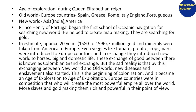Explorers used maps to go beyond the known world and learn about new lands. Approximately over 20 years, 7 million in gold and minerals were taken from America to Europe. Even vegetables like tomato, potato, maize were introduced to European countries, and in exchange, the new world was introduced to horses, pigs, and domestic life. This exchange of goods is known as the Columbian Grand Exchange. But the sad reality is that through this exchange between the new world and old world, new diseases and enslavement also started — this is the beginning of colonization, and it became an age of exploration turned into an age of exploitation.